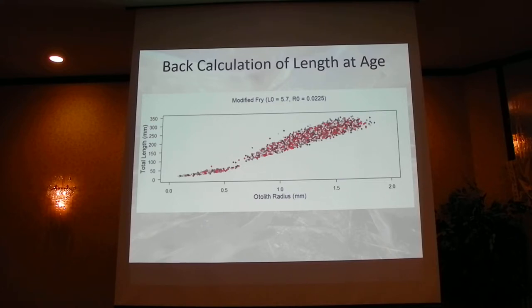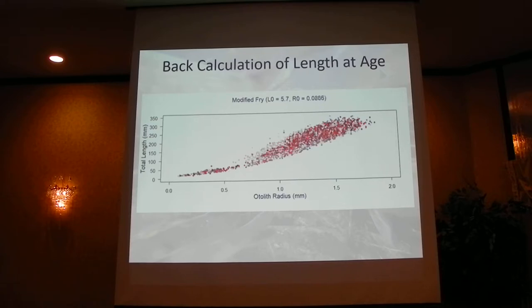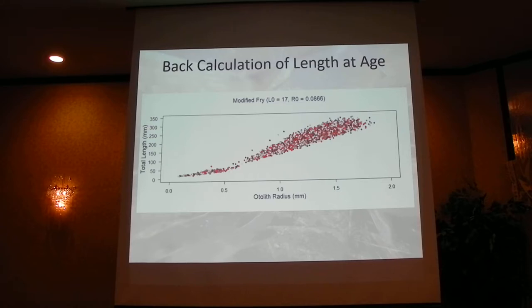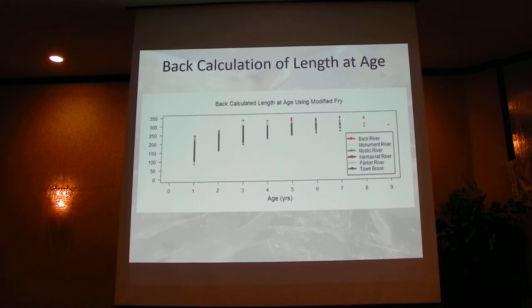Those parameters significantly influence our back-calculated lengths, so it's really important to determine the correct values. If we change R0, you can see how much the back-calculated lines shift. Ultimately we used data from the juvenile dataset to constrain those parameter values, forcing the curve to go through that juvenile data. This gave us a dataset much more conducive to fitting a growth curve.